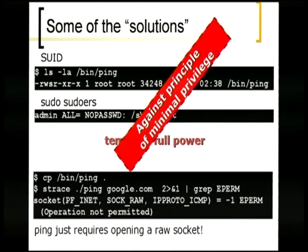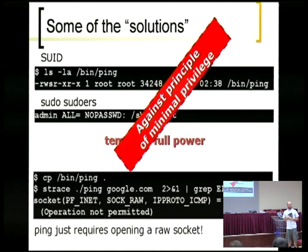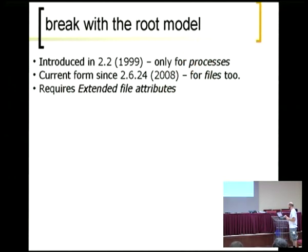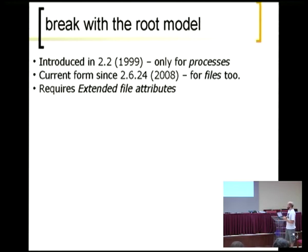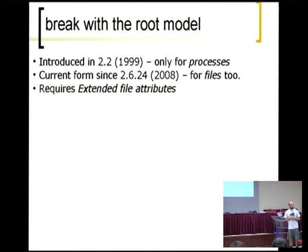Why is capability important? Because it tries to enforce the concept of minimum privilege, which is not the case with sudo or with SUID. This concept of capabilities has been in the kernel since version 2.2, which was quite some time ago. It has its current useful form since kernel 2.6.24, and it requires extended file attributes, so it doesn't work on NFS and similar filesystems.